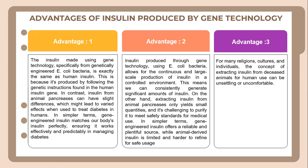Let's look at the advantages of insulin produced by gene technology. The first advantage is that insulin made using gene technology, specifically from genetically engineered E. coli bacteria, is exactly the same as human insulin. This is because it is produced by following the genetic instructions found in the human insulin gene. In contrast, insulin from animal pancreases can have slight differences which might affect its effectiveness when used to treat diabetes in humans. In simpler terms, gene-produced insulin matches our body's insulin perfectly.